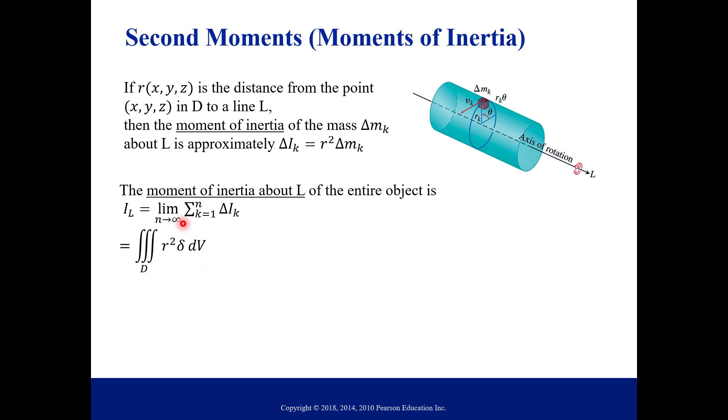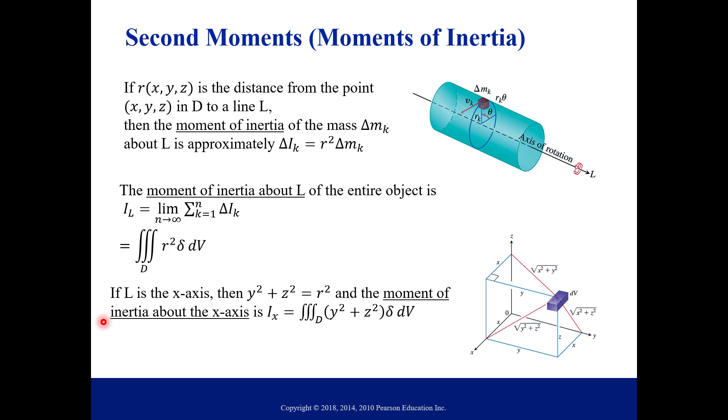We can rewrite this as a triple integral. So we're going to use the triple integral version for our formulas. So it's the triple integral over our region D of R squared times our density delta, dV. So for example, if L happens to be the X axis, so notice your distance here from where you're rotating.